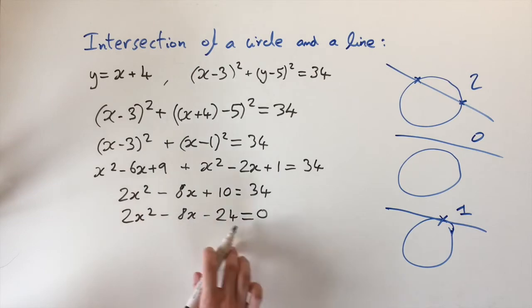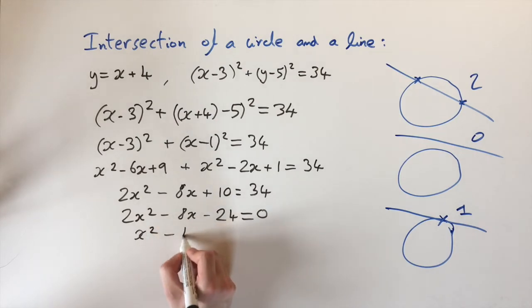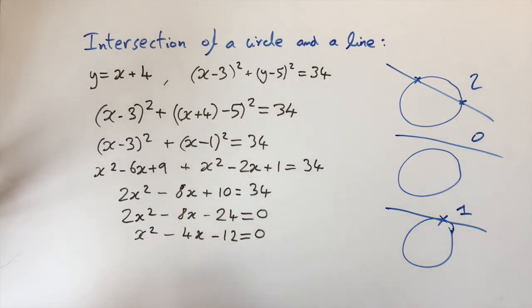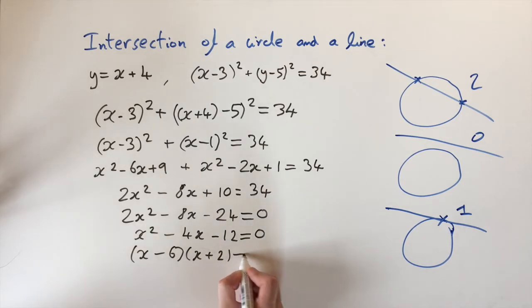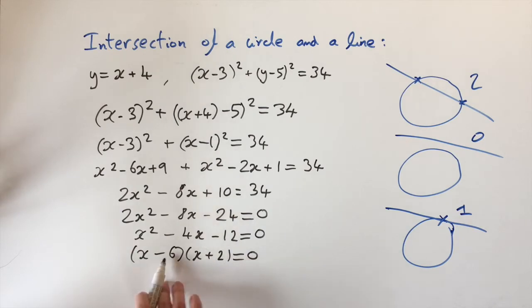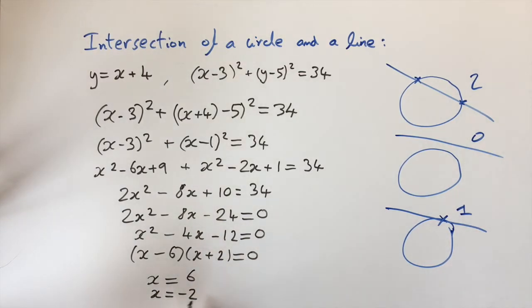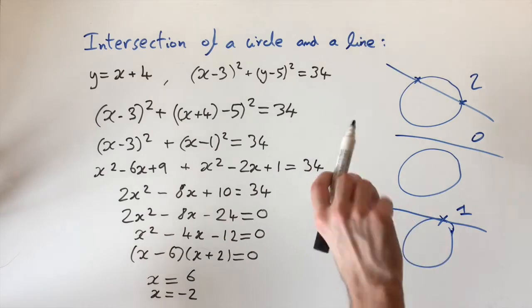We notice all terms are multiples of 2, so we divide through by 2, giving x squared minus 4x minus 12 equals 0. This is a nice quadratic which factorizes as x minus 6 times x plus 2 equals 0 — you can verify this gives minus 12 and minus 4x. So either x equals 6 or x equals minus 2. We have two solutions, meaning we're in the first case where the line intersects the circle at two places.